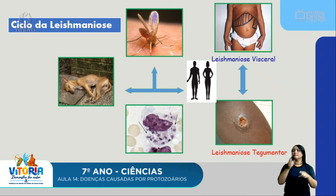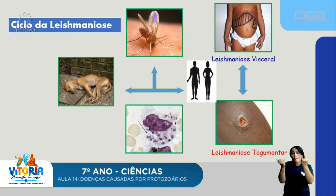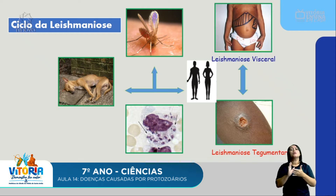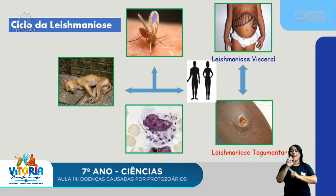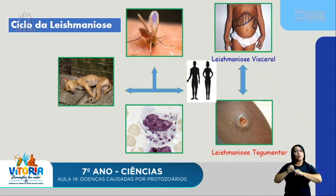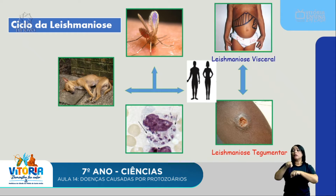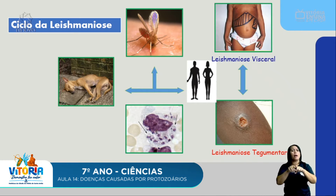Os cães também apresentam sintomas parecidos com os dos seres humanos: feridas na pele, magreza, unhas bem aumentadas, apatia, fraqueza e podem ir à morte. O grande problema da leishmaniose é que se um cão em uma residência está infectado, o mosquito que picar esse cão ficará infectado e, ao picar o ser humano, transmitirá a doença. Portanto, a prevenção é evitar a presença dos mosquitos, pois o mosquito é quem transmite — não o cão.